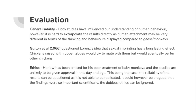Guiton et al. also questioned Lorenz's idea of sexual imprinting, saying that if animals have this type of attachment when young, they'd have problems reproducing sexual behaviour later in life — which is an important part of evolution. But Guiton didn't find this to be permanent. They raised chickens in an environment with rubber gloves, and the chickens at first attempted to mate with the rubber gloves. Later on, though, they developed healthier sexual relationships with appropriate mates. This suggests the impact isn't as deterministic as first thought.